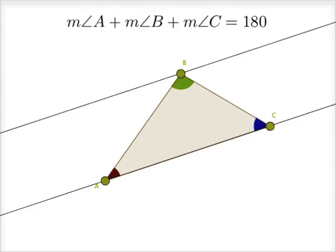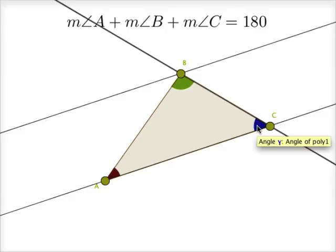Now if we consider some of the other sides as transversals to these two parallel lines, thinking back to previous chapters, this blue angle has an alternate interior angle pair. These two blue angles are congruent because they're alternate interior angles.